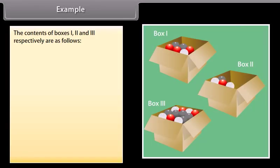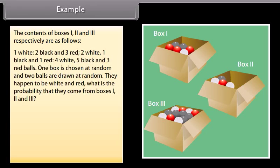Example: The contents of boxes 1, 2, and 3 respectively are: Box 1: 1 white, 2 black, 3 red; Box 2: 2 white, 1 black, 1 red; Box 3: 4 white, 5 black, 3 red balls. One box is chosen at random and 2 balls are drawn at random. They happen to be white and red. What is the probability that they came from box 1, 2, or 3?